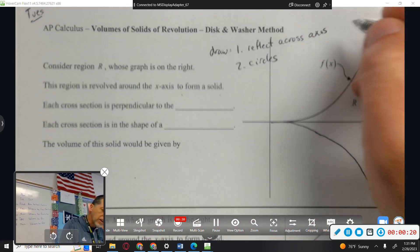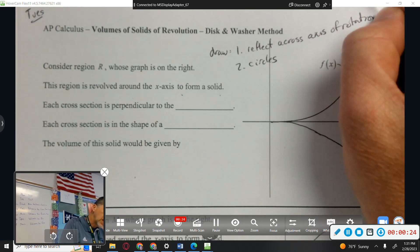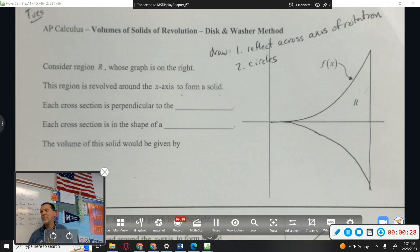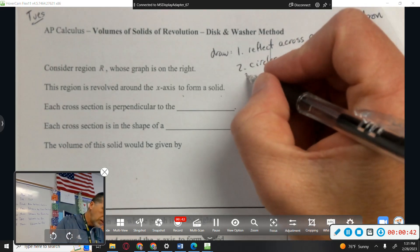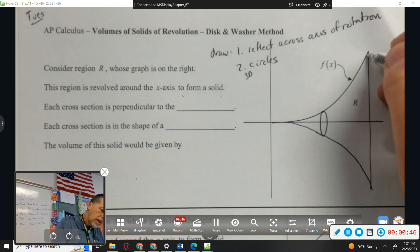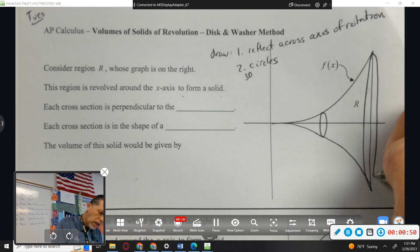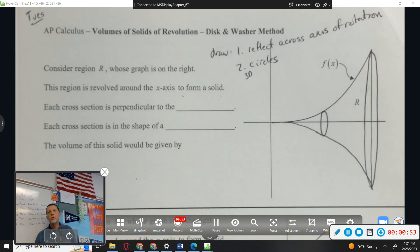So to draw it, reflect across the axis of rotation. For us, that's the x-axis. A little later, we'll reflect it around things that aren't on the axis. So whatever the axis of rotation is, reflect it across that. Then try to draw some 3D circles, and hopefully that gives you a sense of what the shape looks like. That one looks like a Hershey Kiss on its side. A cone, a sideways cone.